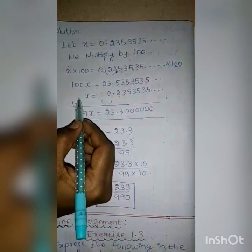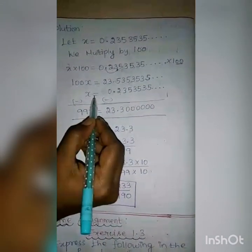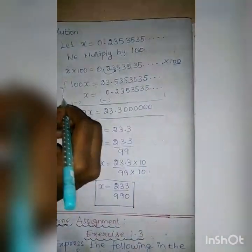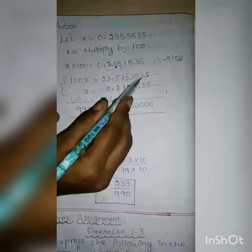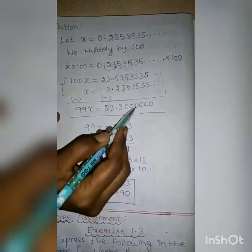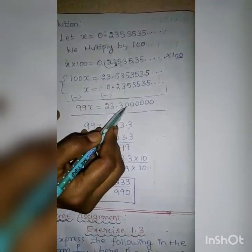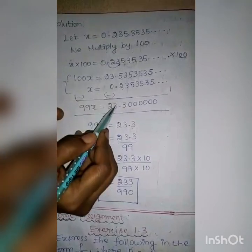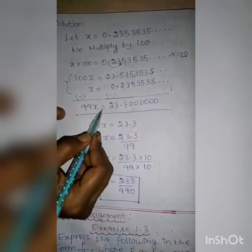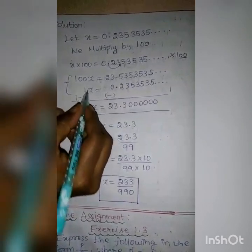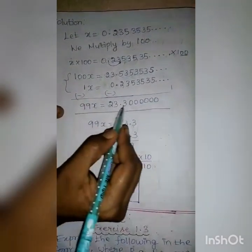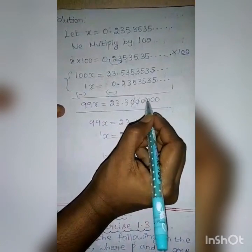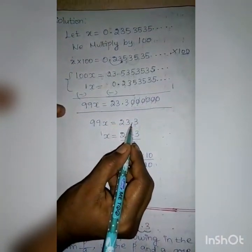Then subtract X from 100X. X equal to 0.2353535. Subtracting: 5 minus 5 is 0, 3 minus 3 is 0, 5 minus 5 is 0, 3 minus 3 is 0, 5 minus 5 is 0, 3 minus 3 is 0, then 5 minus 2 is 3, point, 3 minus 0 is 3, then 2. The coefficient of X is 1, so 100X minus 1X is 99X. Cut the zeros after the point. So 99X is equal to 23.3.